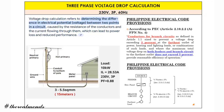Welcome to our new learning. This time we have a three-phase voltage drop calculation at 230 volts, 60 hertz. Voltage drop is used to determine the difference in electrical potential between two points in a circuit, caused by the resistance of conductors and current flowing through them, which can lead to power losses and reduced performance.